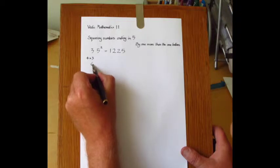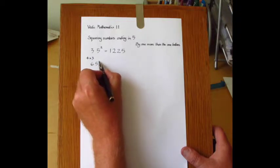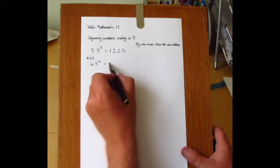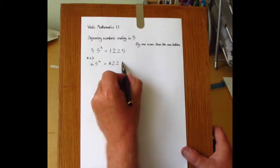Another example: 65 squared. One more than 6 is 7. 6 times 7 is 42. And put down the square of 5, so 4225.